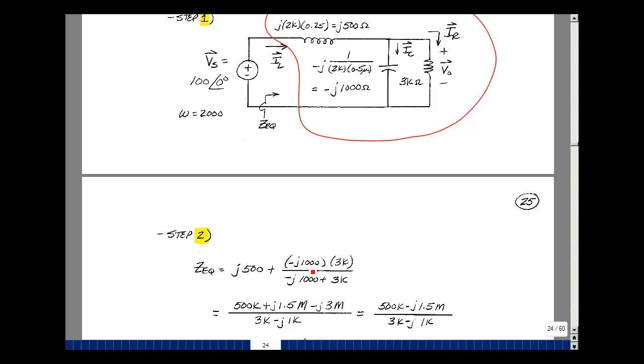And then this product over here, we're just going to add that in, is a minus j 3 million. So we've got 500K and then the difference of these two is a minus j 1.5 million.